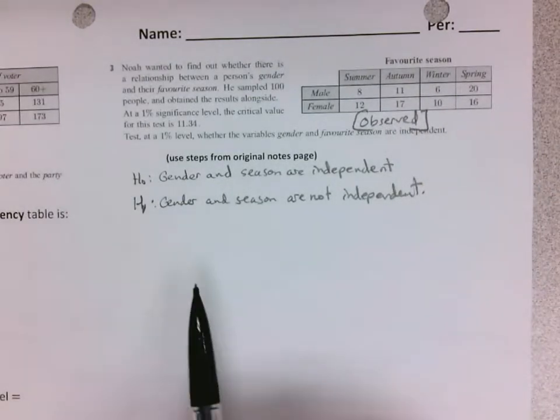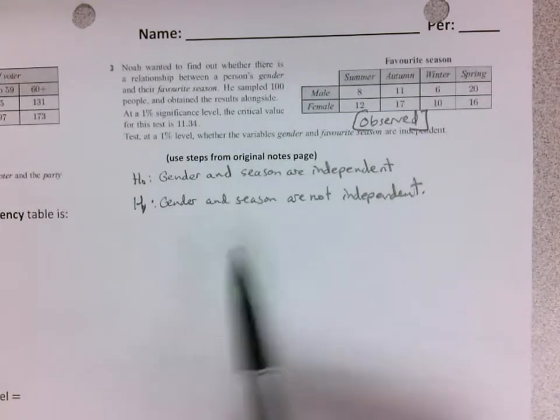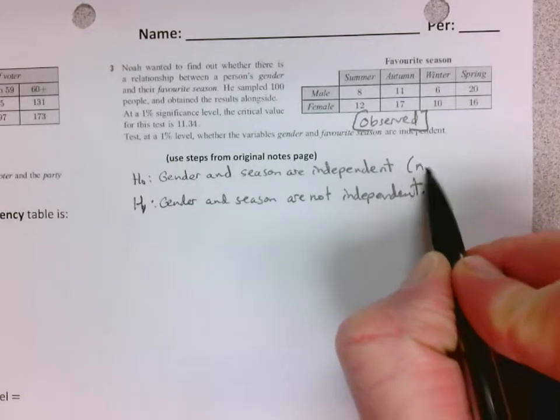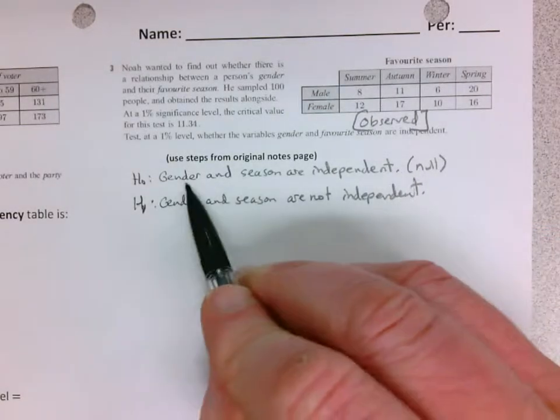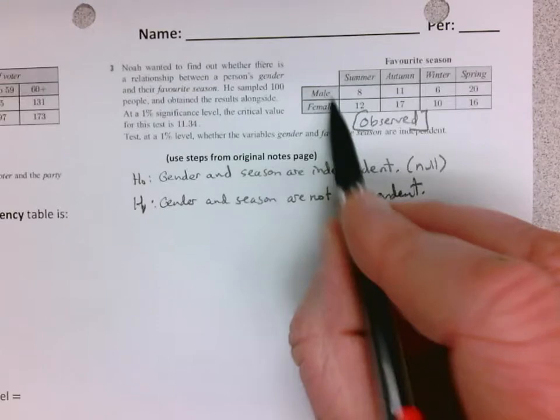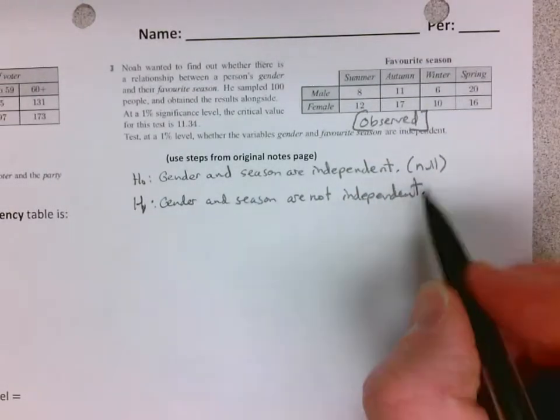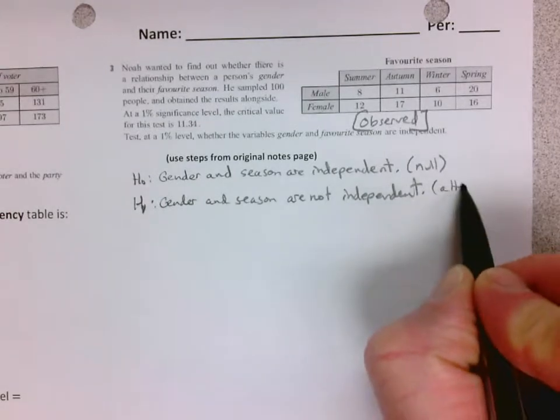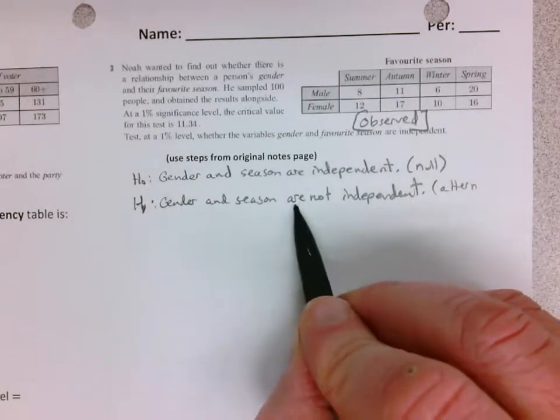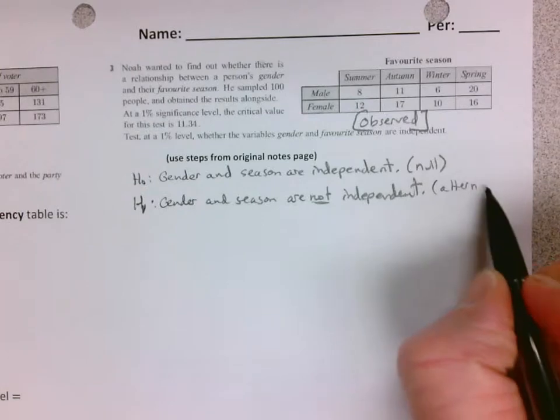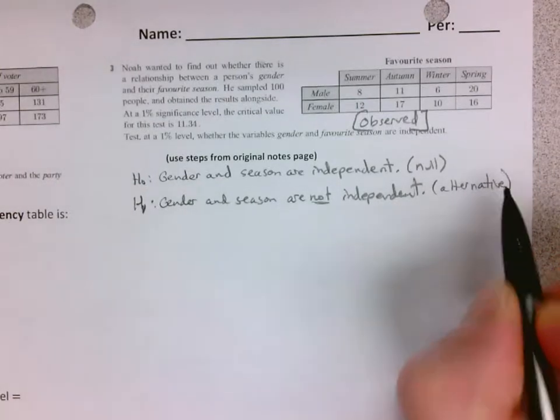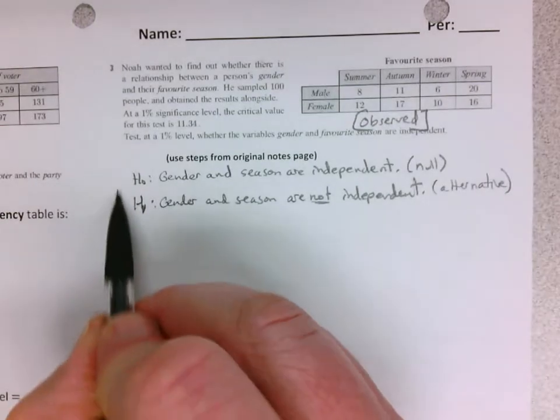Our first step is to write the null hypothesis and the alternate hypothesis. So the null is always that gender and season are independent. So there's your gender, there's your season, they're independent. And then the alternative is just they are not independent. Don't write dependent. That's your first step, step one in the process.